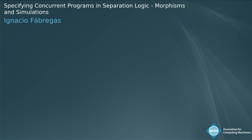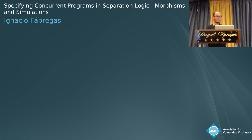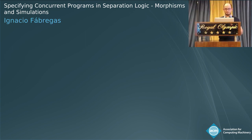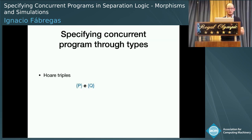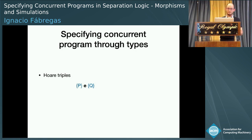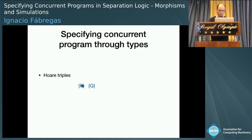We are going to specify concurrent programs through types. Our idea is to use type theory, because type theory is already compositional, and we are interested in obtaining compositionality of proofs. So instead of having this whole triple — precondition, program, and postcondition — we will see the precondition and postcondition as part of the type of our program.